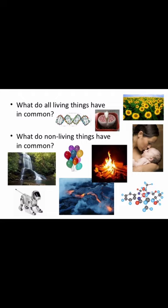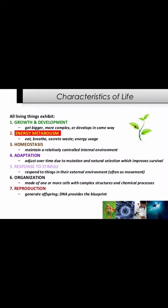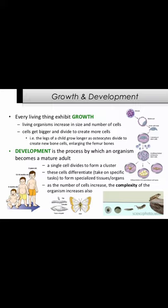Characteristics of life: living things exhibit (1) growth and development — get bigger, more complex, or develop in some way; (2) energy metabolism — eat, breathe, excrete waste; (3) homeostasis — maintain a relatively controlled internal environment; (4) adaptation — adjust over time due to mutation and natural selection; (5) responds to stimuli — respond to things in their external environment, often as movement; (6) organization — made of one or more cells with complex structures and chemical processes; (7) reproduction — generate offspring; DNA provides the blueprint.